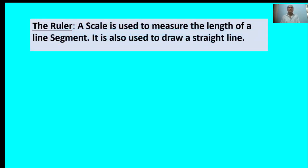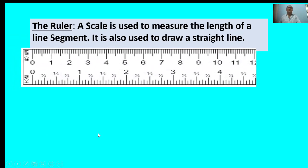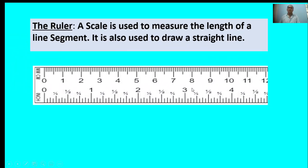First, the ruler. A scale is used to measure the length of a line segment. It is also used to draw a straight line. This is called a ruler.